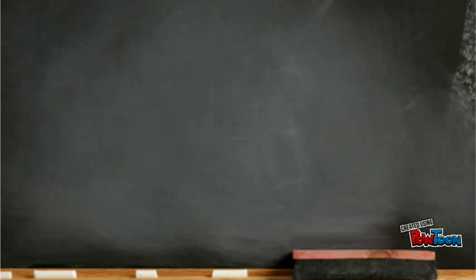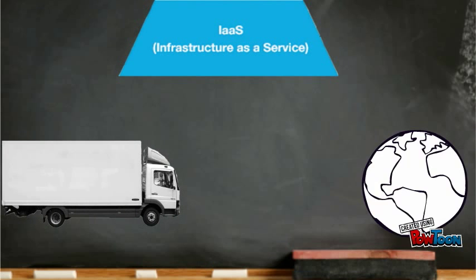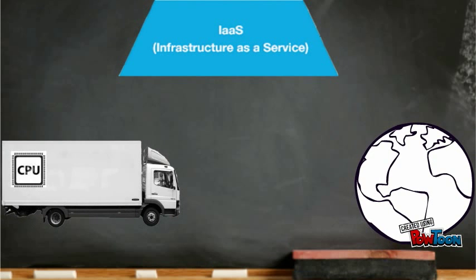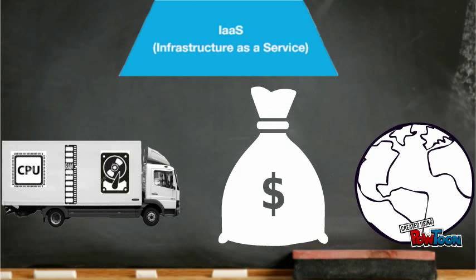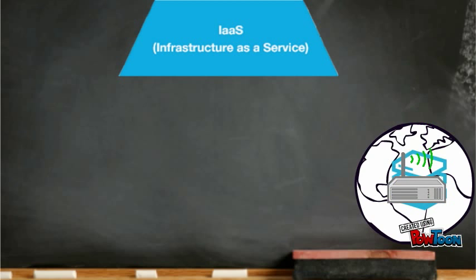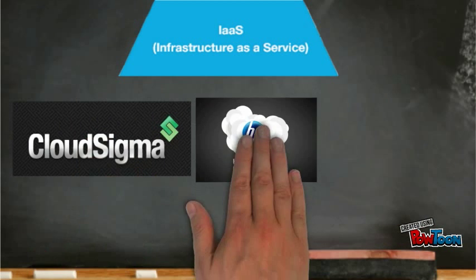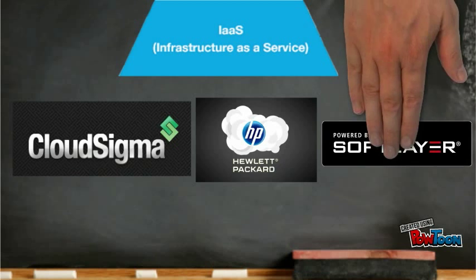Last but not least, infrastructure as a service is defined as computer infrastructure being delivered as a service. This means you're buying access to virtualized computing hardware over the internet, such as servers, network components, and data storage. Examples of some providers are Cloud Sigma, HP Cloud, and SoftLayer.